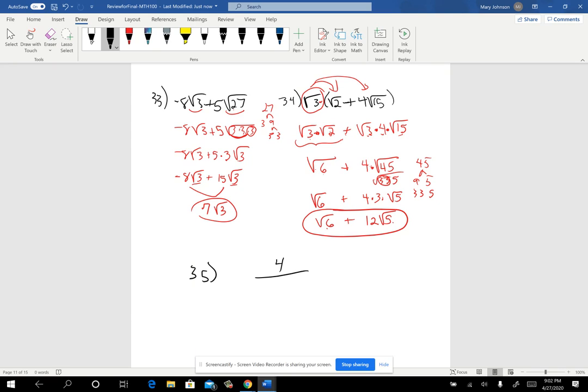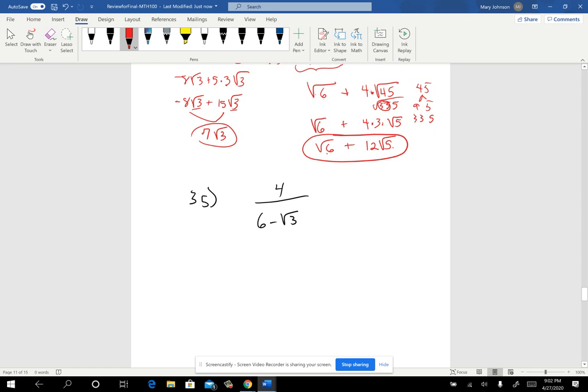On problem number 35, we have four over the six minus the square root of three. So with problems like this, the directions say to rationalize the denominator. Rationalize. That means get rid of the radical.